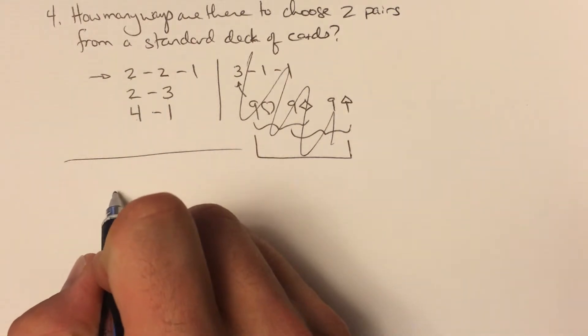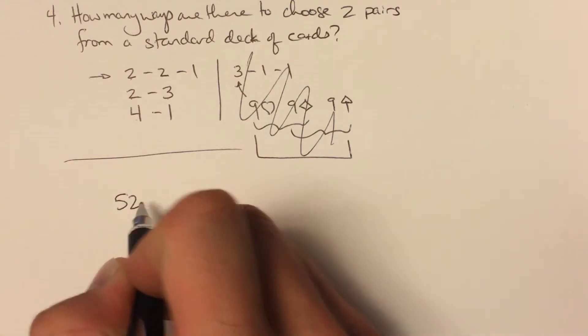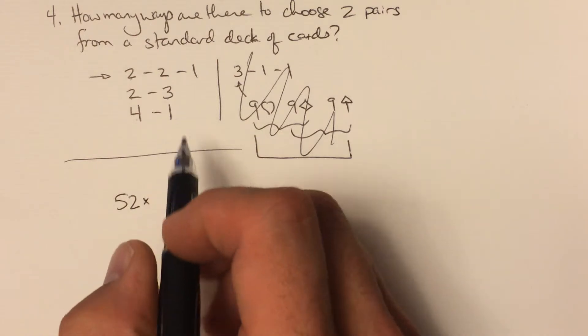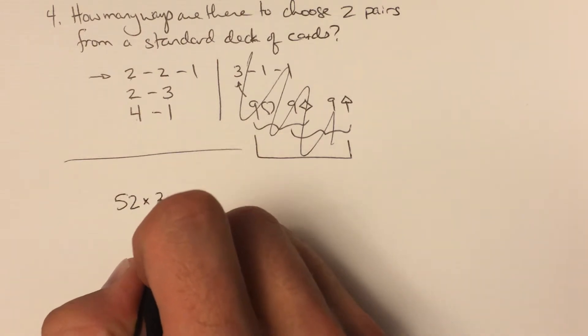The way I like to think about this is to choose any card in the deck—there are 52 cards to choose from. And then after we have selected that card, if I want to make a pair, there are only three other cards in the deck that match that card.